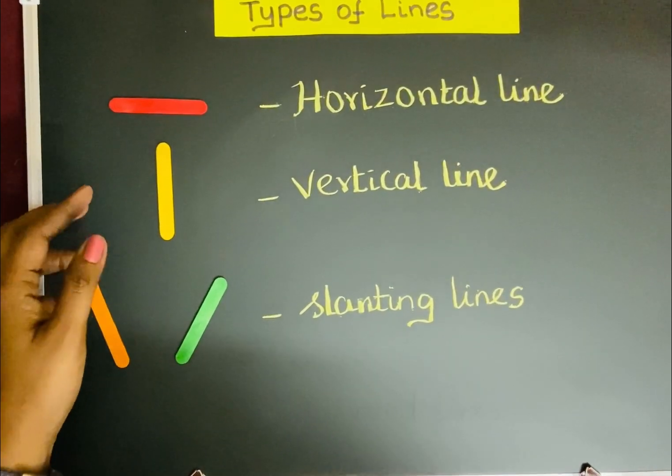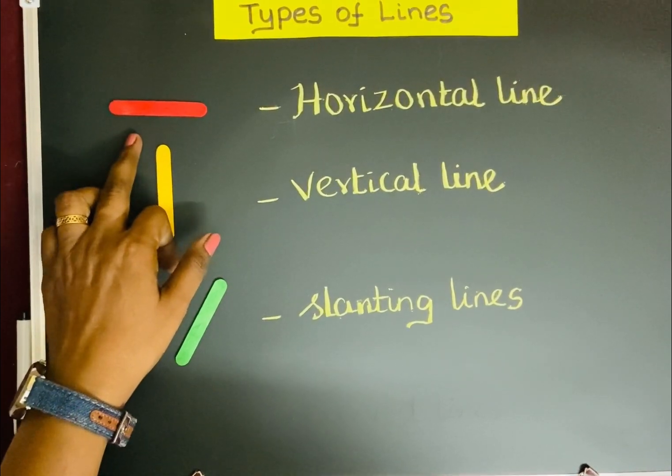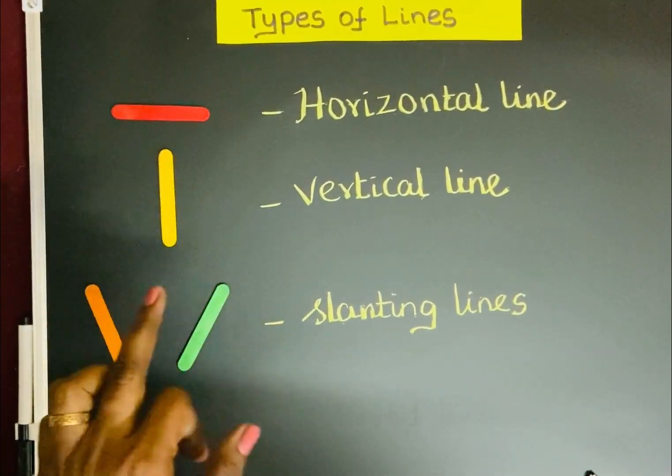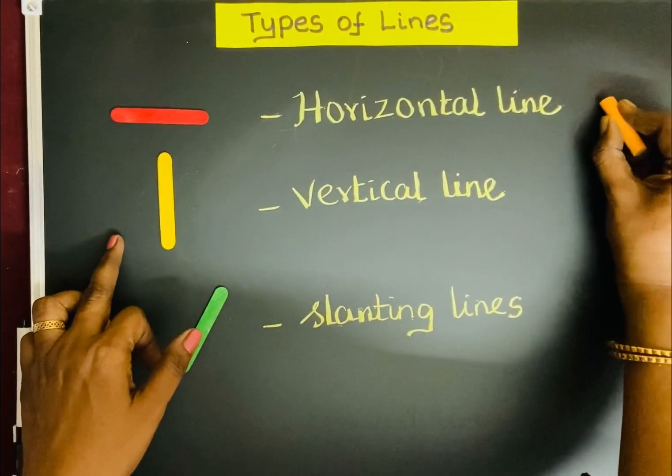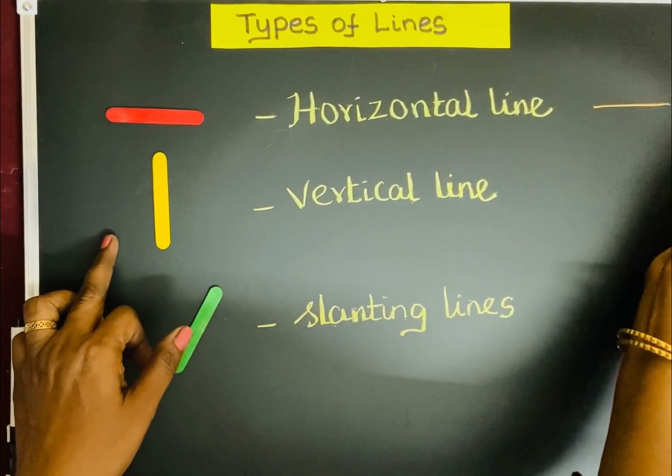Let's see the types of lines. See the first one. This is a horizontal line which moves from right to left.